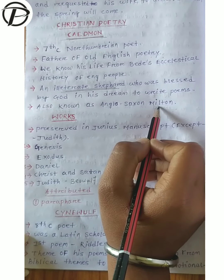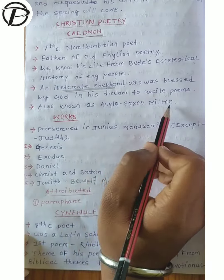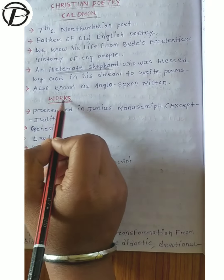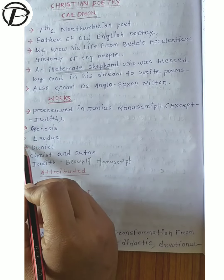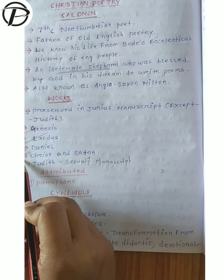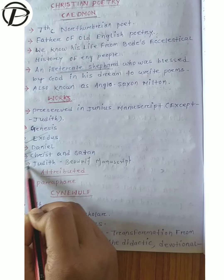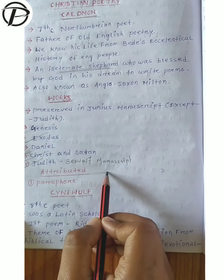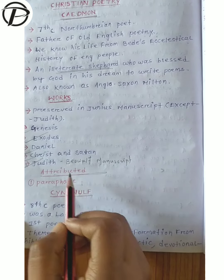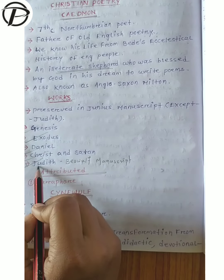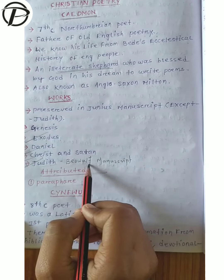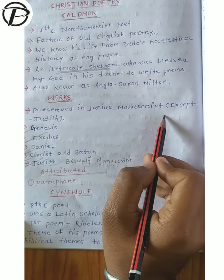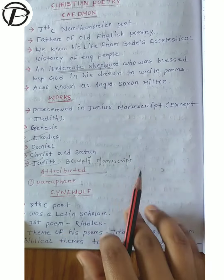Caedmon is also known as the Anglo-Saxon Milton. He is the father of Old English poetry. His works are Genesis, Exodus, Daniel, Christ and Satan, and Judith. One attributed poem is the Hymn (paraphrase). Judith is in the Beowulf manuscript, while the other four are present in the Junius manuscript.